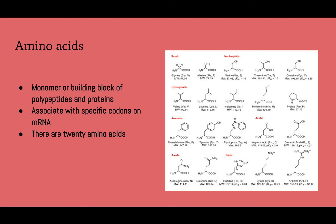There are 20 different amino acids, and they can be acidic, basic, nonpolar, or polar. The 20 different types can be seen on the chart to the right.